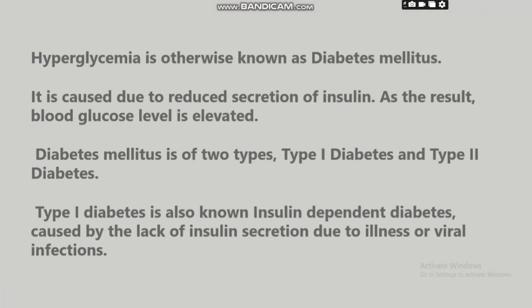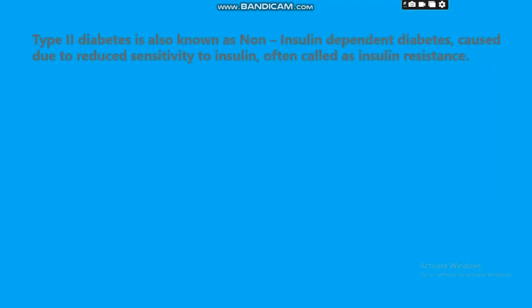Type 1 diabetes, also known as insulin-dependent diabetes, is caused by the lack of insulin secretion due to illness or viral infections. Type 2 diabetes, also known as non-insulin dependent diabetes, is caused due to reduced sensitivity to insulin, often called insulin resistance.